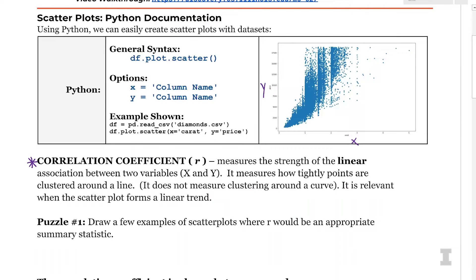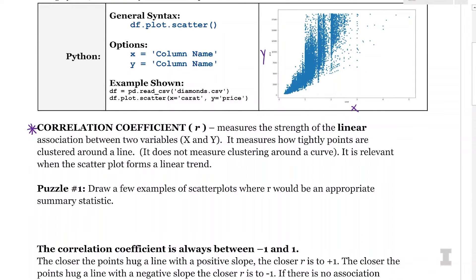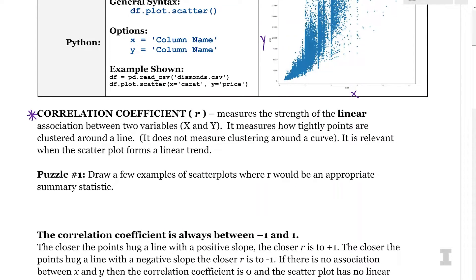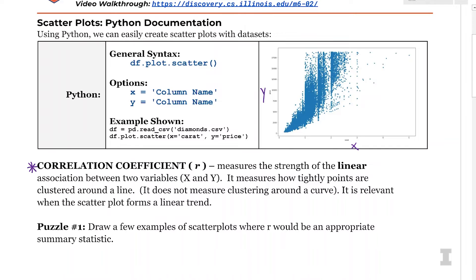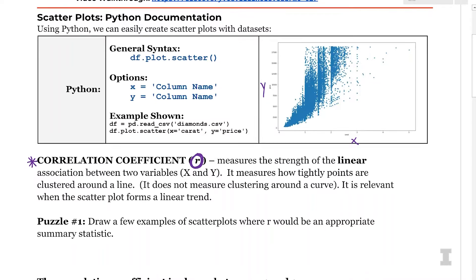So the correlation coefficient is a statistic that measures the linear association between x and y. It specifically looks at the strength of that linear association. We can think of this as measuring how tightly the points are clustered around a line. We know that it doesn't represent how tight points are clustered around a curve or any other shape because this is specifically for linear relationships. And it's relevant when the scatterplot forms a linear trend, kind of like we see up here. The statistical symbol for the correlation coefficient is the lowercase letter r. So you're going to see me using that throughout the series as we talk about the correlation.